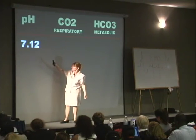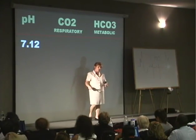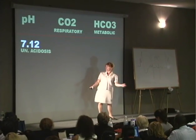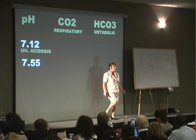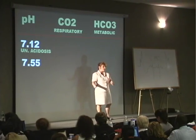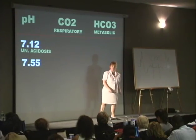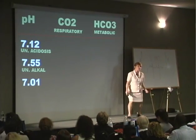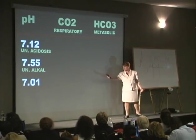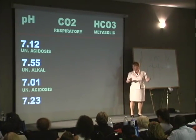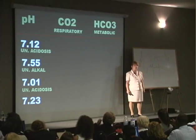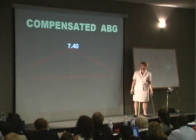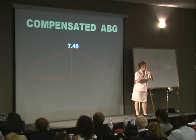Let's have a baby. 7.12 — what's my baby's first name? Uncompensated. What's my baby's last name? Acidosis. 7.55 — first name? Uncompensated. Last name? Alkalosis. 7.01 — first name? Uncompensated. Last name? Acidosis. 7.23 — first name? Uncompensated. Last name? Acidosis. Step number one: look at your baby's pH, get the kid's first and last name. You were saying uncompensated because the pH was not normal.